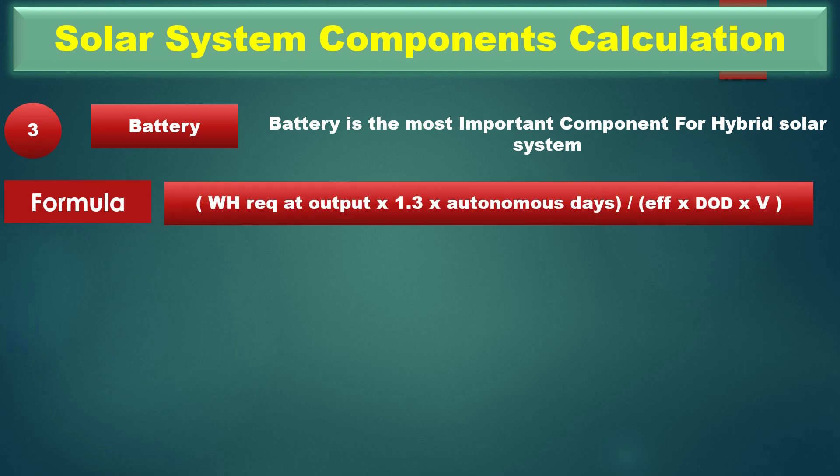The third calculation is the battery. Battery is the most important component for a hybrid solar system. The battery formula is: watt-hours required at output multiplied by 1.3, multiplied by autonomous days, divided by efficiency, multiplied by DoD, multiplied by V. We need to know autonomous days, efficiency, DoD, and V.